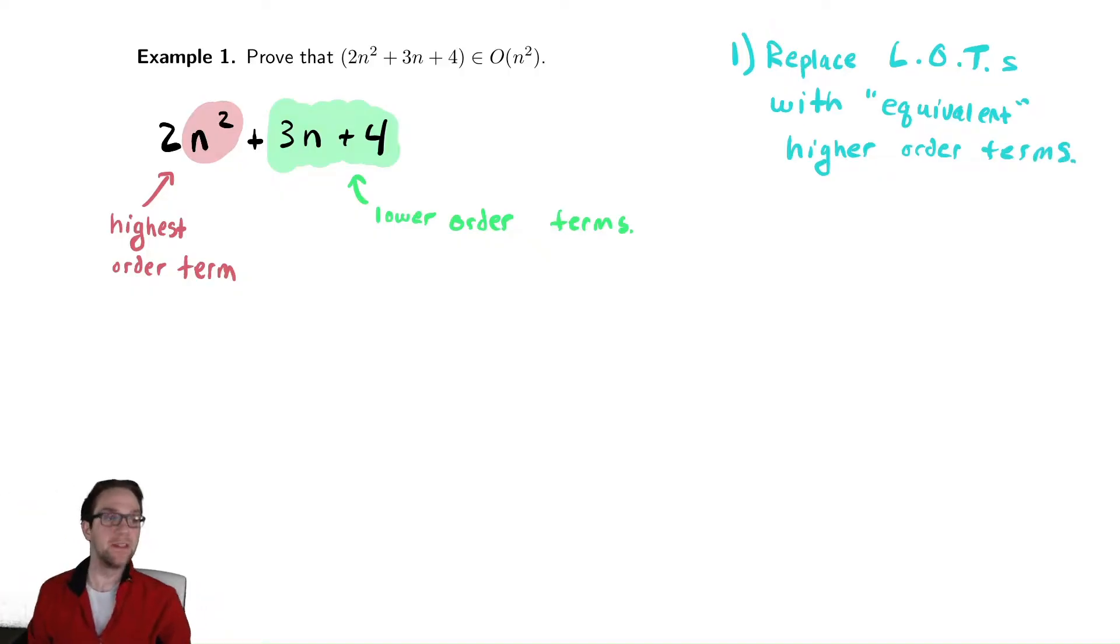What do I mean by that? I'll write down the two things I'm going to observe here. The first one is that 3n is less than or equal to 3n². Is that the case? Well, let's do some algebra and check if that's actually true.